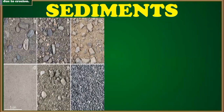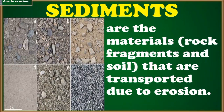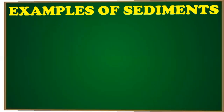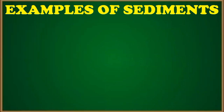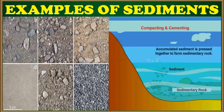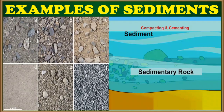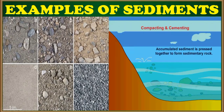Now, what do you think are these — the soil, the rocks? These are what we call sediments. When we say sediments, sediments are the materials like rock fragments and soil that are transported due to erosion. We have some examples of sediments: we have the rock and the soil. Those are examples of sediments.